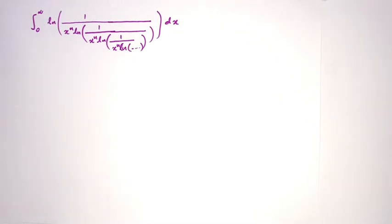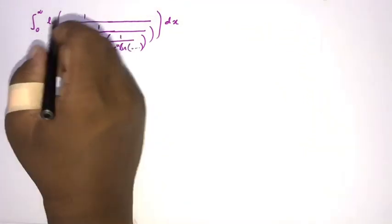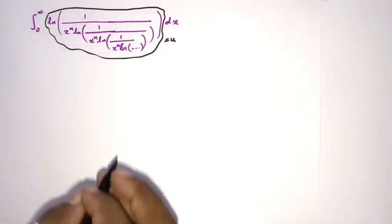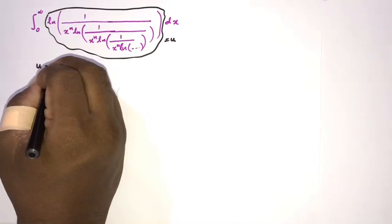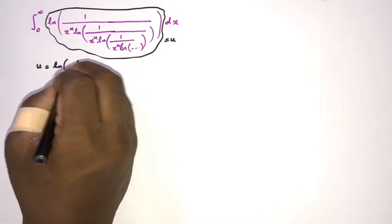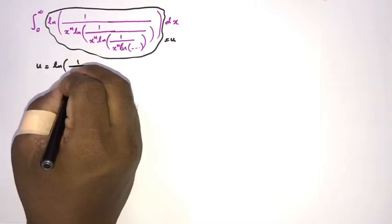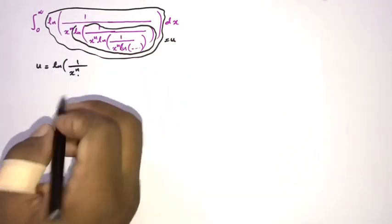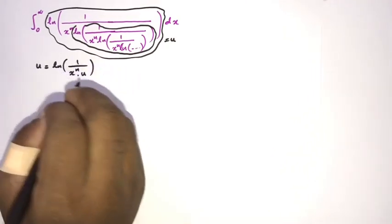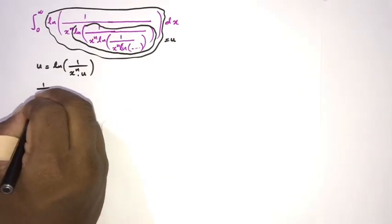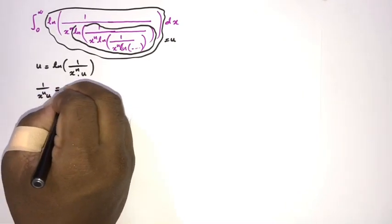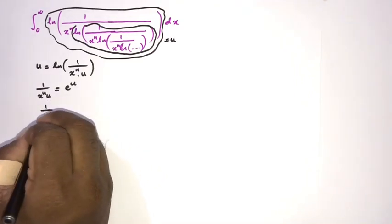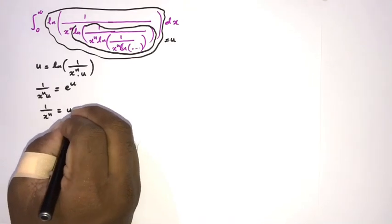First, I am going to take this whole function equal to u. So we can write u is equal to natural log of 1 over x to the n times natural log of this function — we know that is again u. So we can write u here. Now we can isolate 1 over x to the n times u, so 1 over x to the n times u is equal to e to the u. Then multiplying by u, we have 1 over x to the n is equal to u times e to the u.